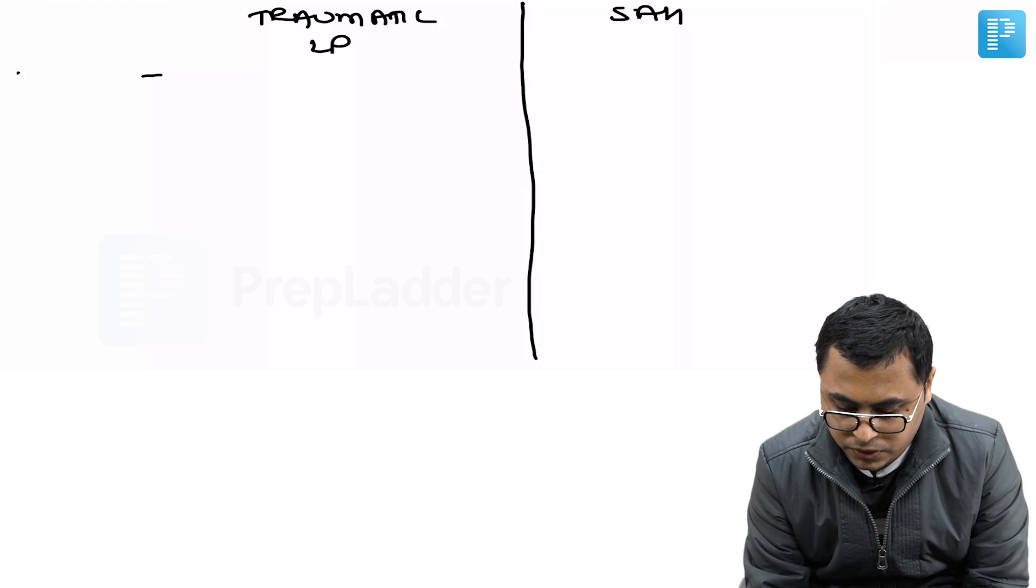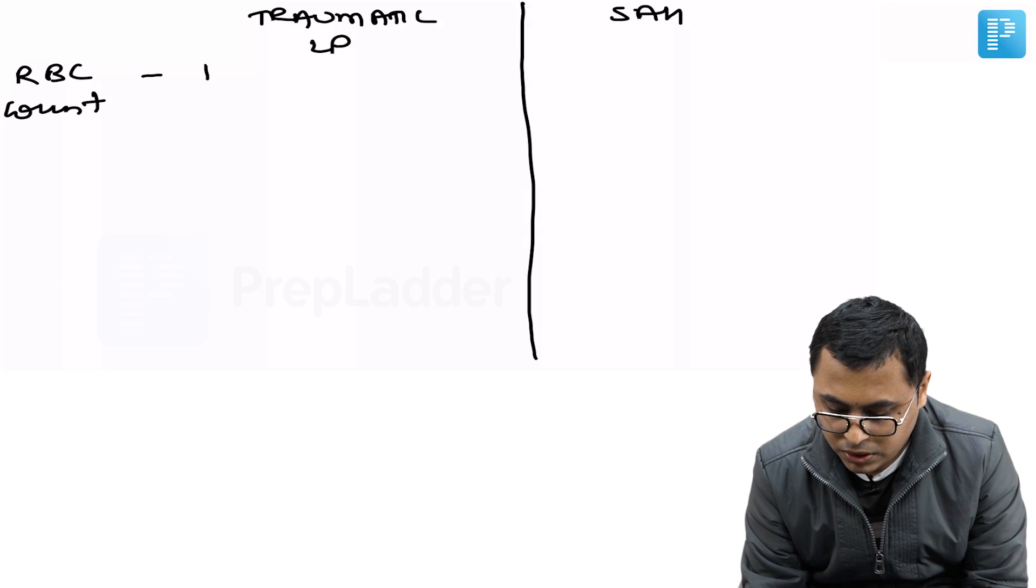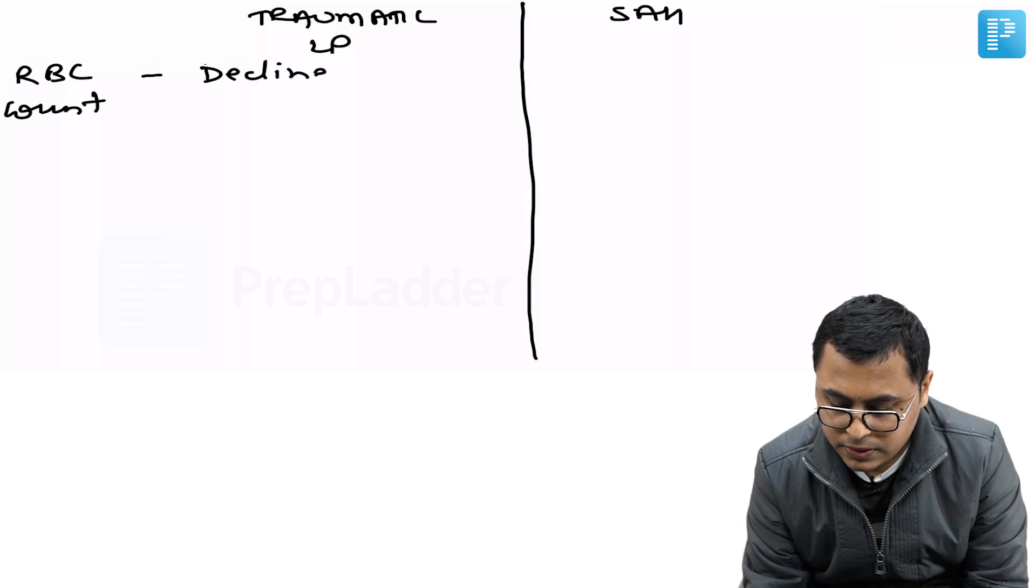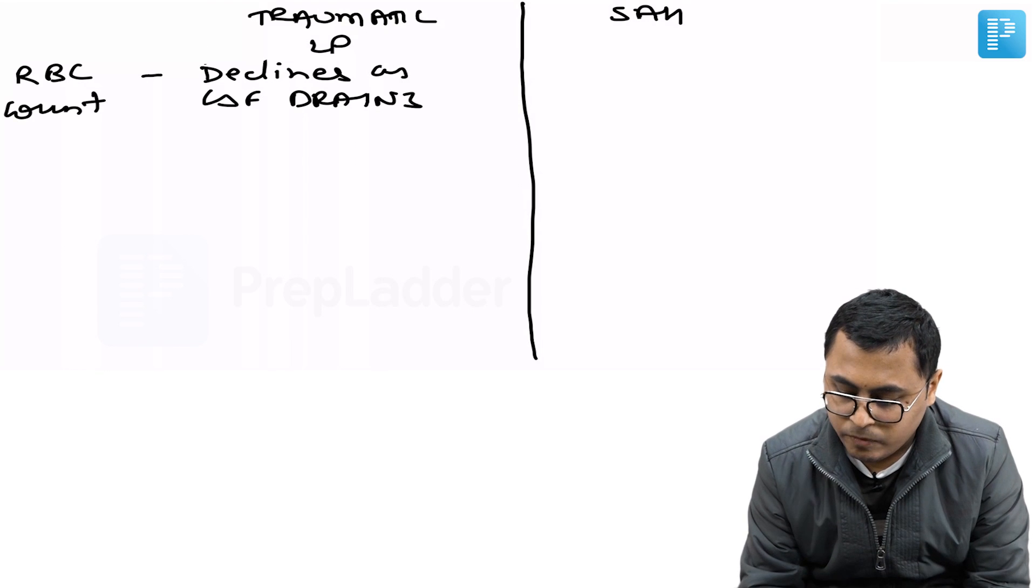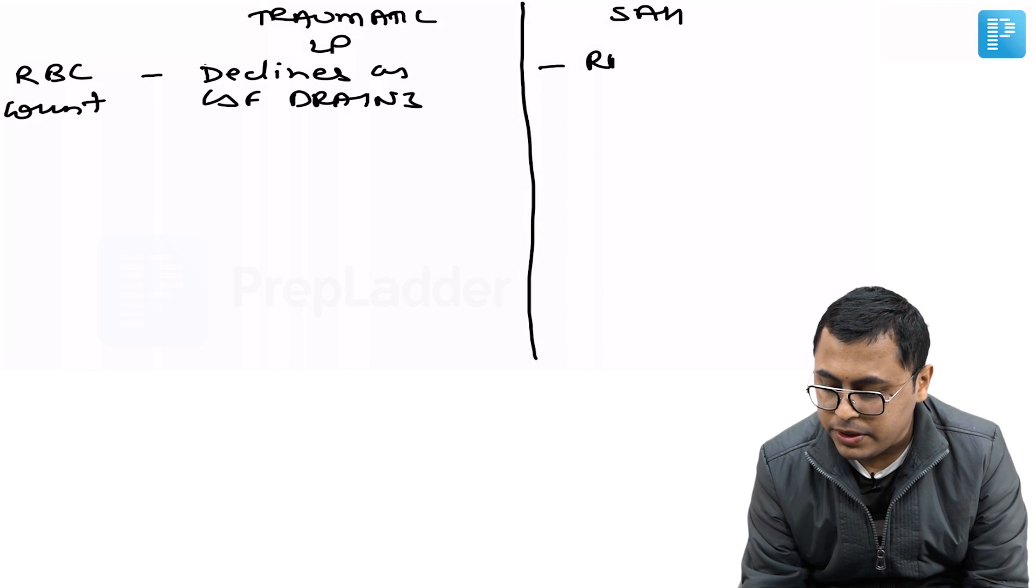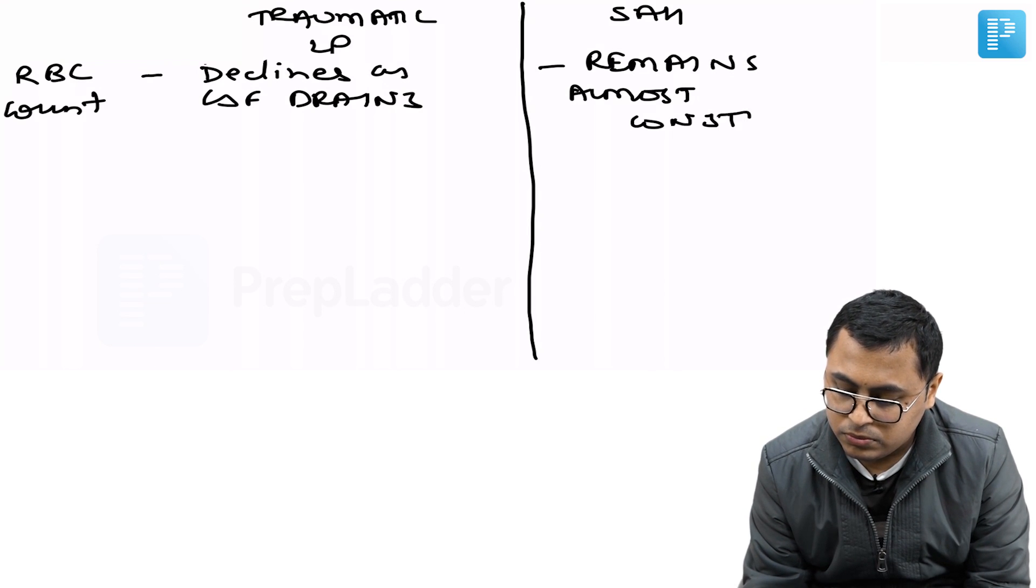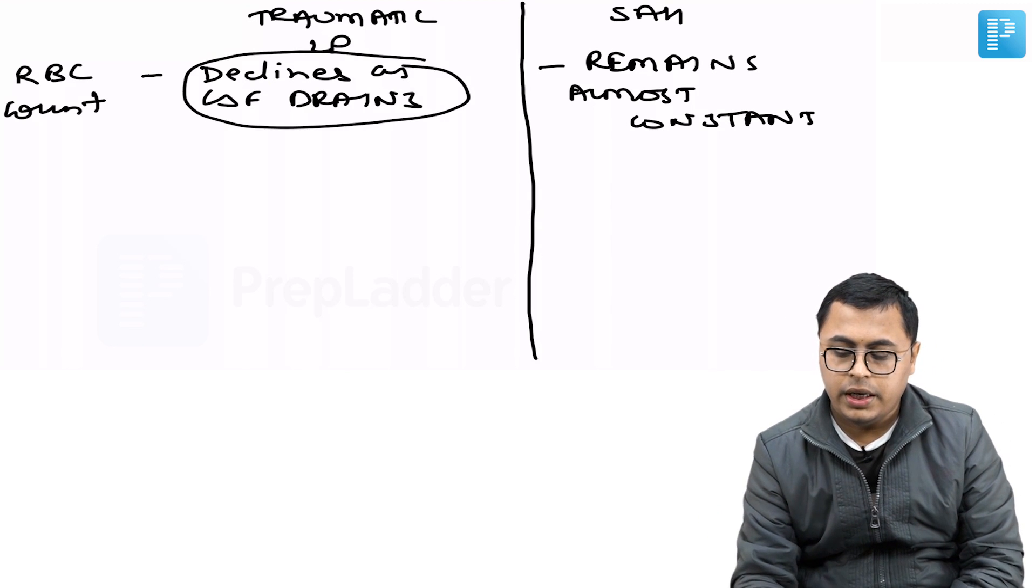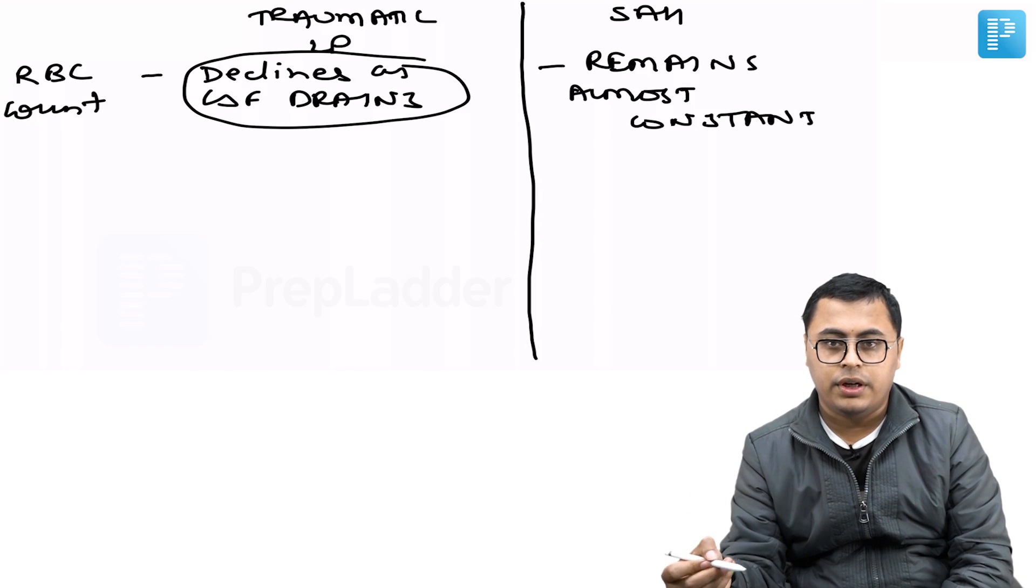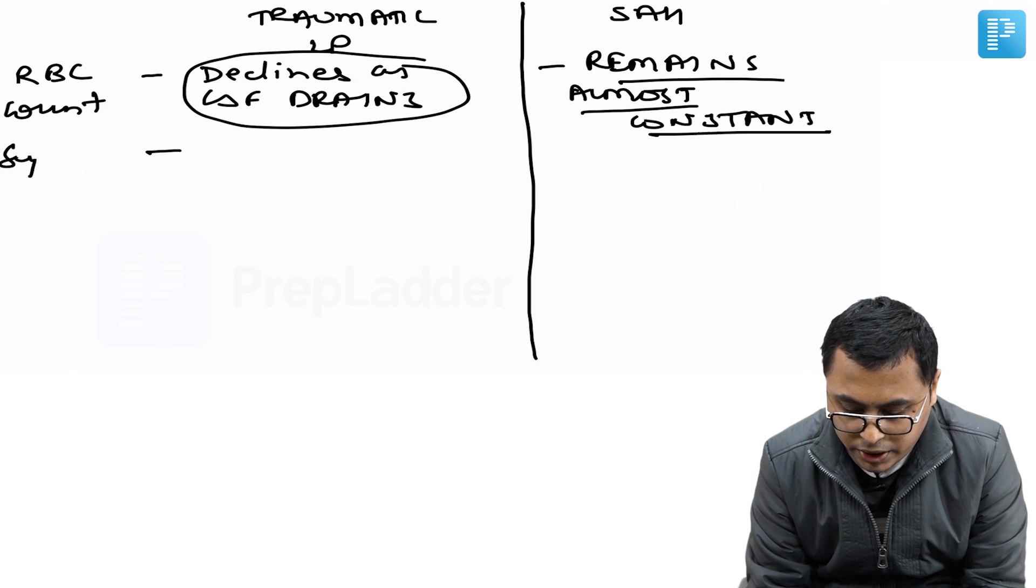Firstly, the RBC count declines as CSF drains in traumatic LP, while in subarachnoid hemorrhage it remains almost constant. That is, in traumatic LP the CSF tends to clear as more CSF is drained, while in subarachnoid hemorrhage it remains the same color, the supernatant.